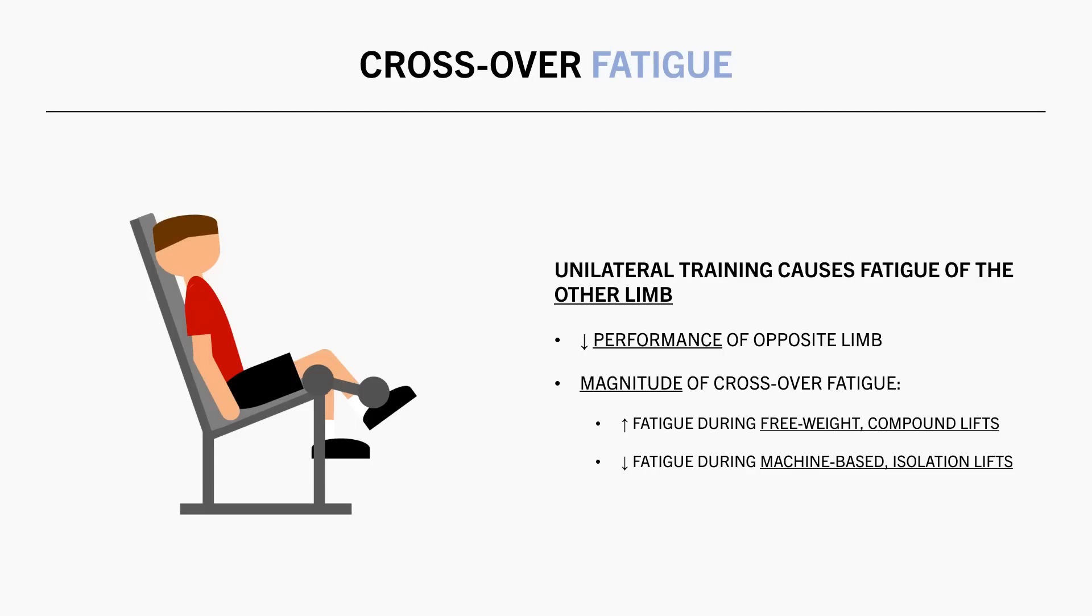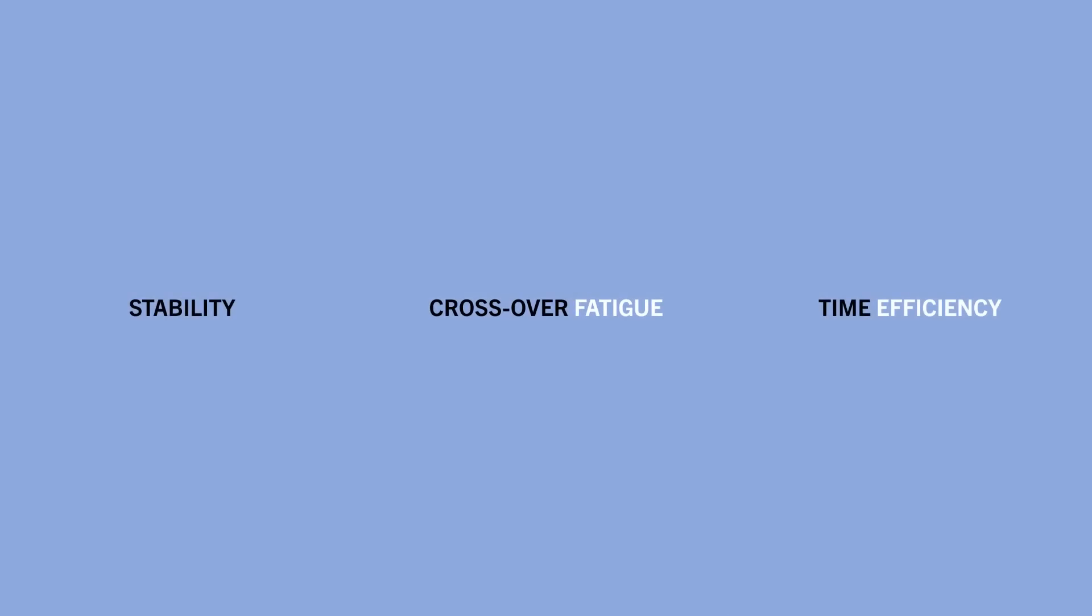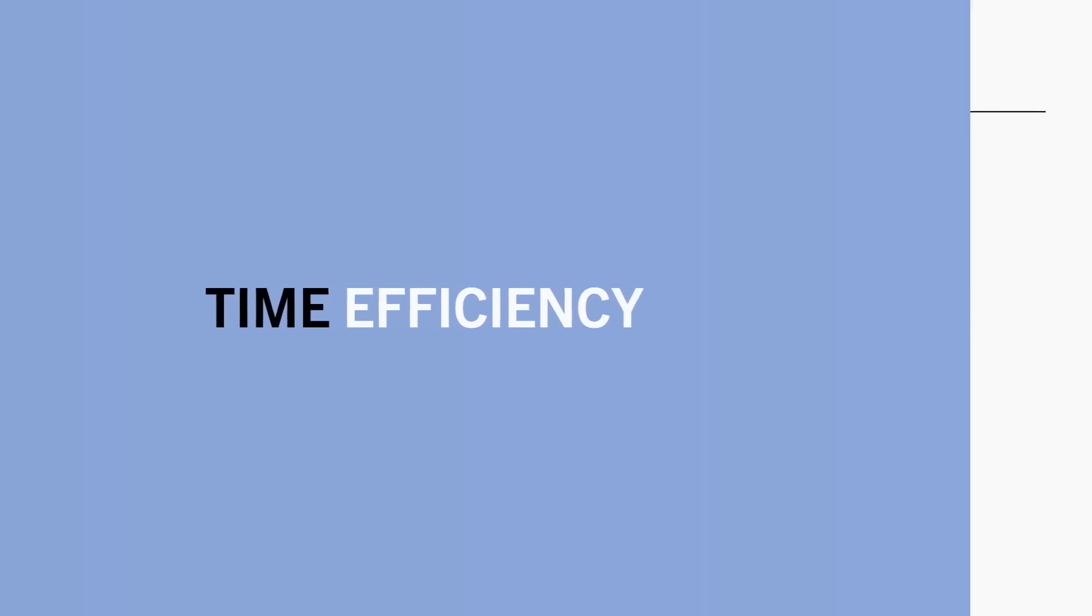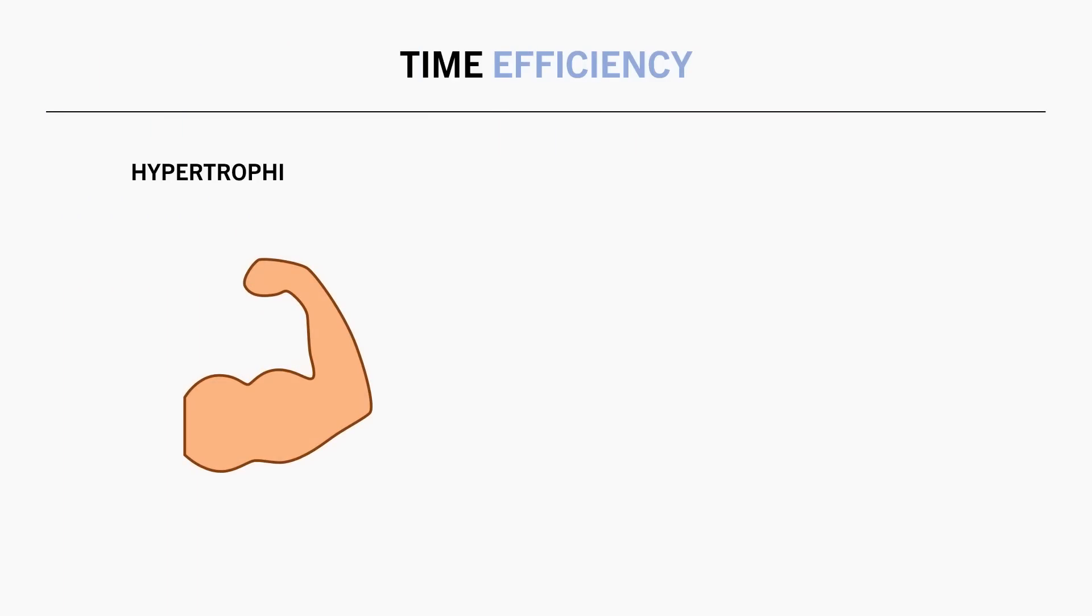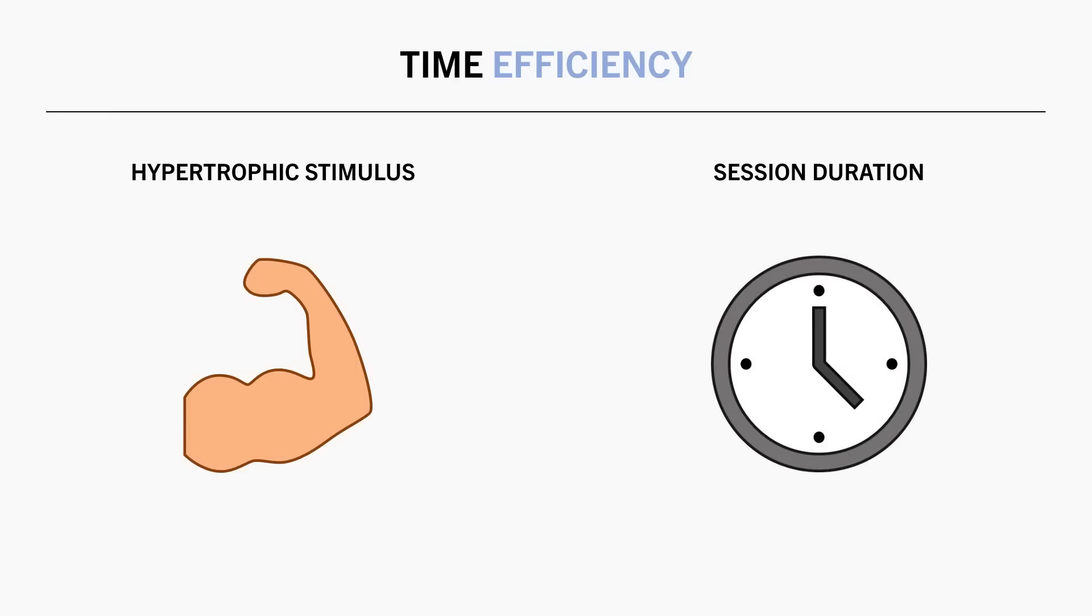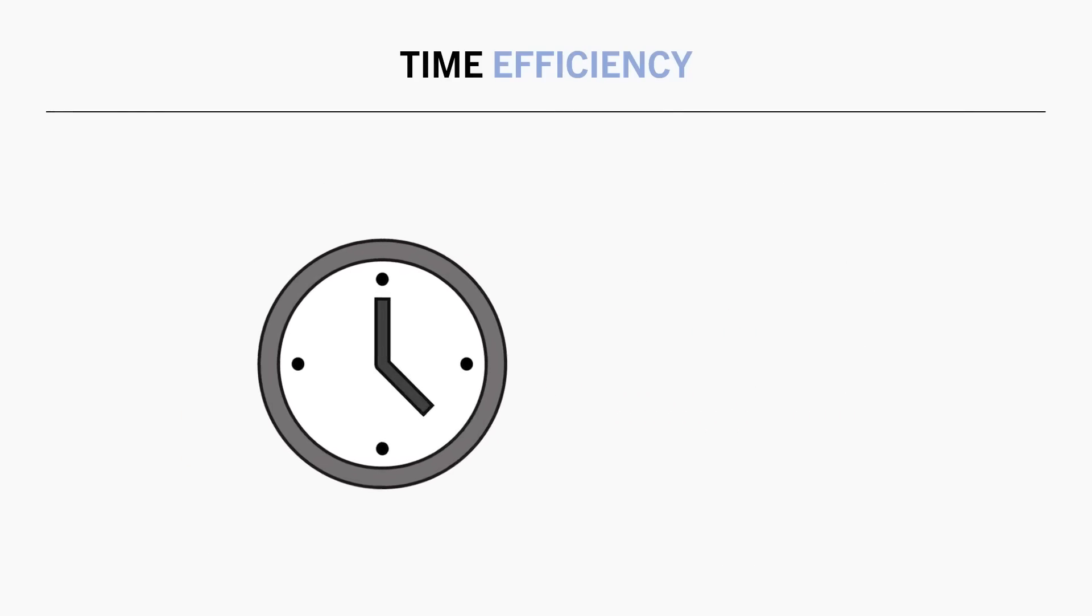And the last potential limitation of unilateral training is its impact on time efficiency. There are two components to time efficiency: the hypertrophic stimulus and the session duration. This means that time efficiency can be improved by either providing a superior hypertrophic stimulus within the same session duration or providing the same stimulus in a shorter time frame. Unilateral training can potentially enhance the hypertrophic stimulus in some cases, however it will almost double the time it takes to complete the same number of sets as you have to train both limbs with each set.